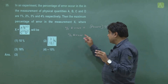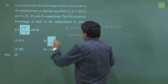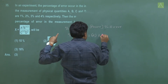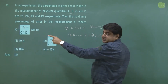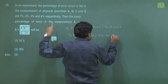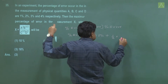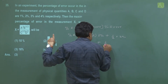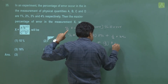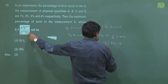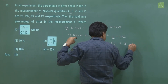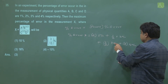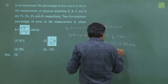Percentage error in x: power of a is 2 multiplied by percentage error of a which is 1%, plus b's power is 1/2 multiplied by b's percentage error which is 2%, plus c's power is 1/3 multiplied by c's percentage error which is 3%, plus d's power is 3 multiplied by d's percentage error which is 4%.